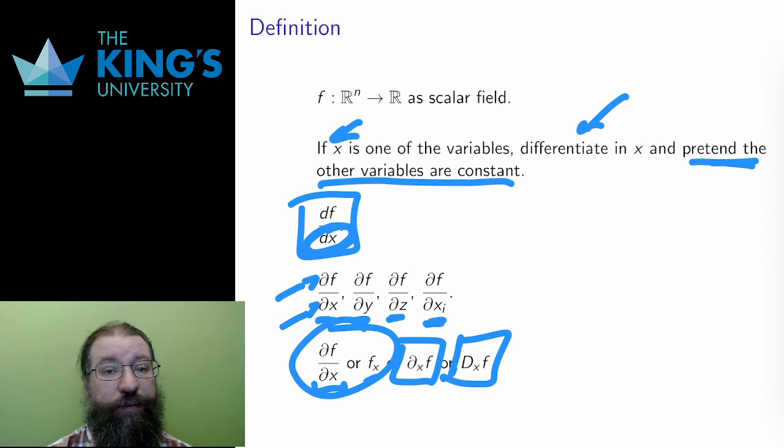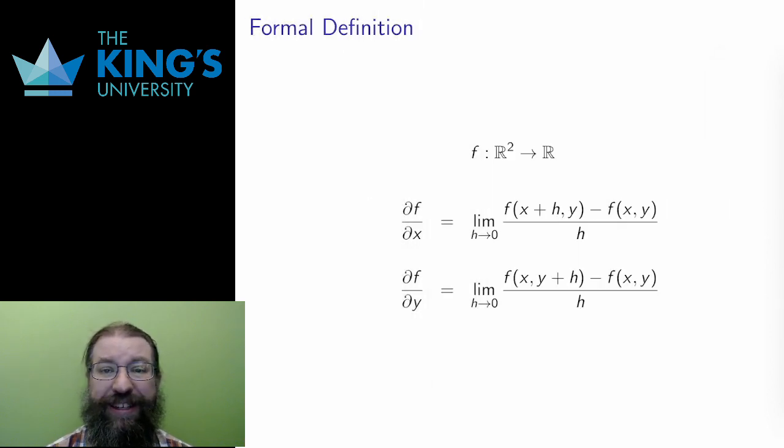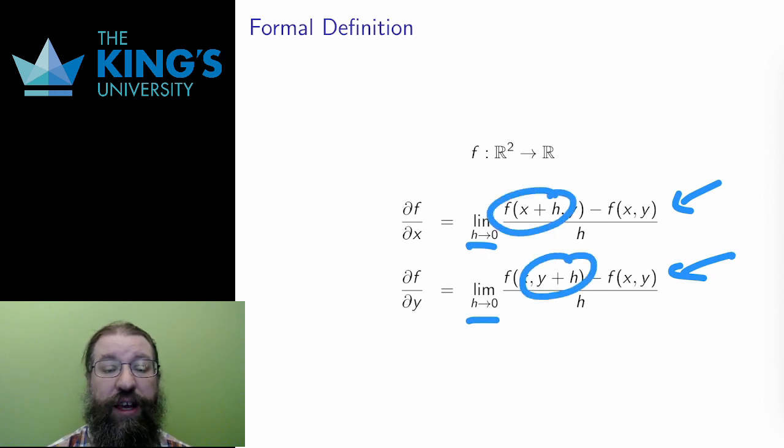There is a formal definition of this derivative, but it is really the same limit definition as the single variable derivative. You can notice that the plus h shows up in the particular coordinate place to match. The plus h on x for the partial derivative in x, and the plus h on y for the partial derivative in y. Since we already know how to take single variable derivatives, I'm not going to dwell on this formal limit definition, but it is good to know that it exists.